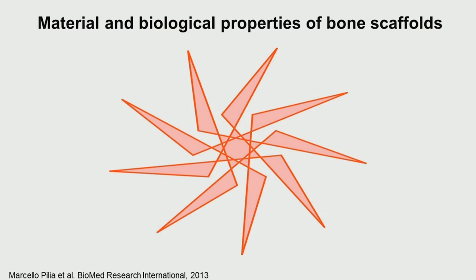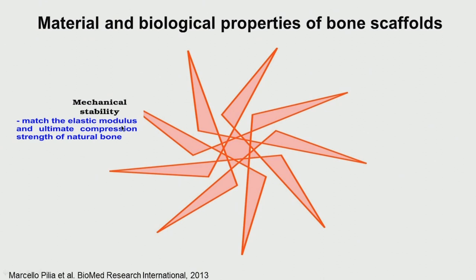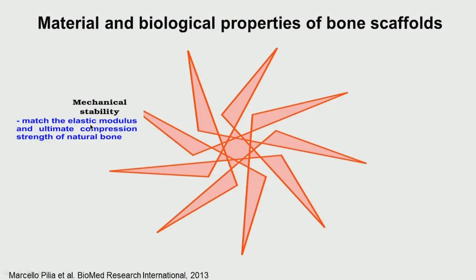What material properties should biomaterials possess to work in the area of bone? Mechanical stability is most important because bone carries a lot of load. The material should match the elastic modulus and ultimate compressive strength of natural bone. If not, there is stress shielding. Stainless steel does not match; titanium and newer versions of titanium have elastic moduli that are getting closer to bone values.